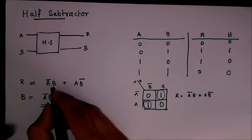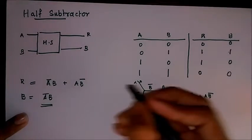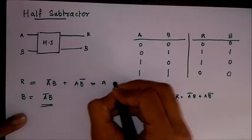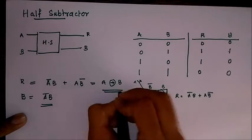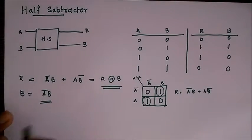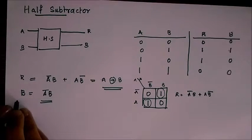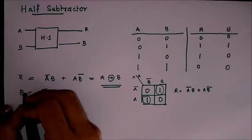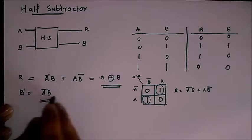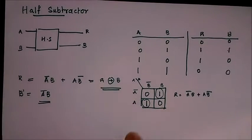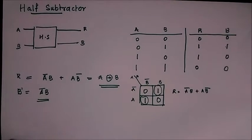If you have noticed, this A̅B + AB̅ is our XOR gate, so this can be written as A XOR B. So our difference or result is A ⊕ B and our borrow is, let me mark this as B dash because it will be confusing with the two B's, so A̅B is our borrow.